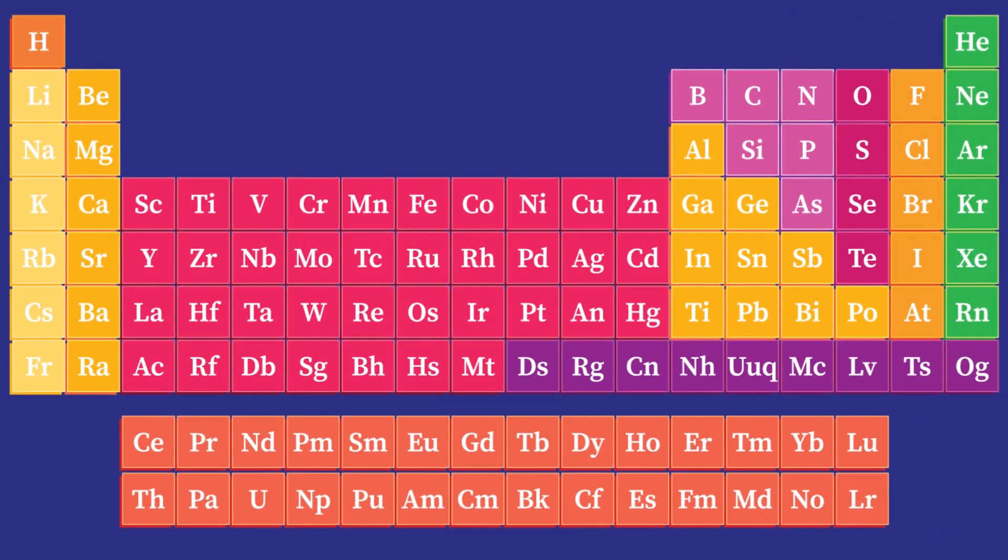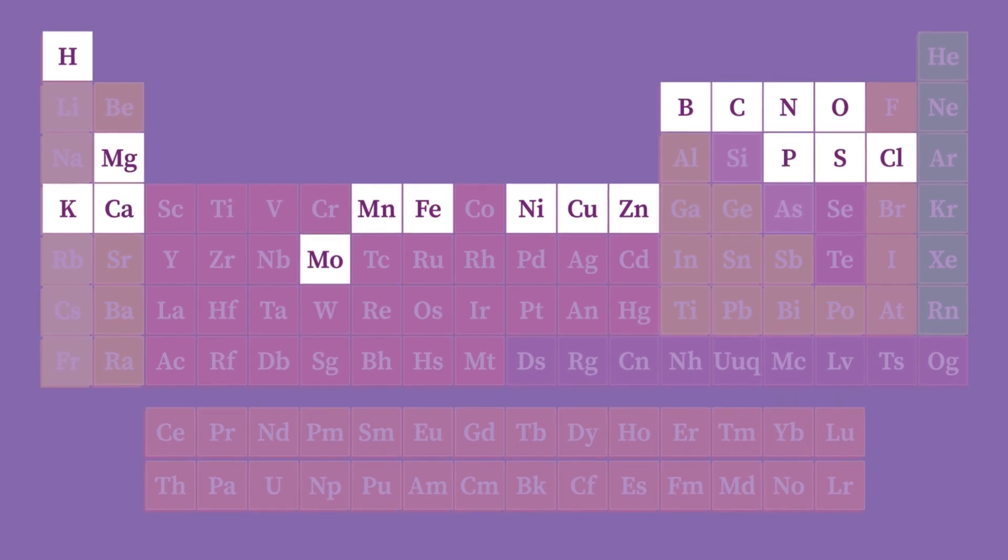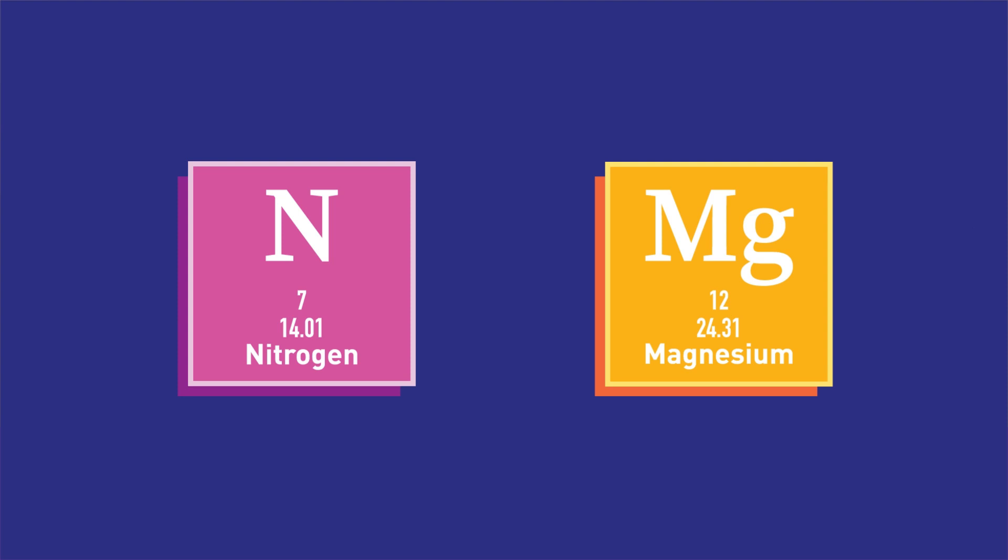Based on plants' requirements, there are at least 17 elements known as essential nutrients. Two of the most important of them are Nitrates and Magnesium.